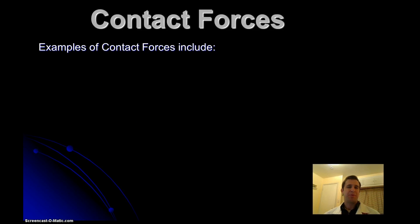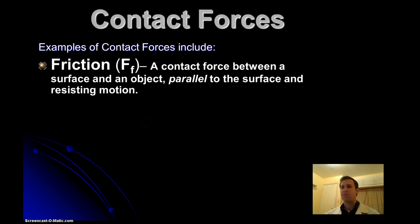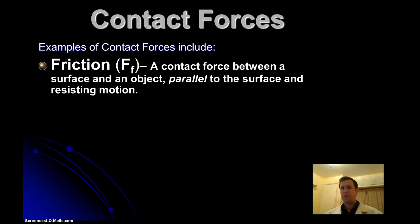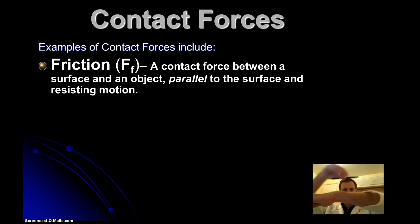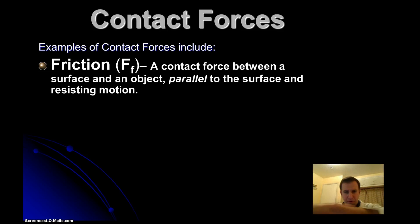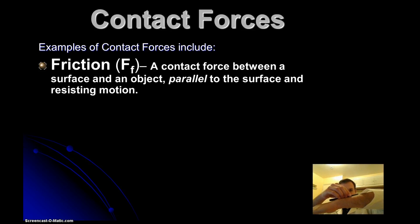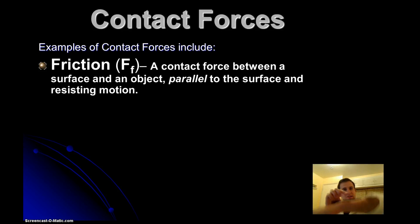Here are a couple of examples of what contact forces include. First of all, friction is a contact force — it's a contact force between the surface of something and an object. A frictional force is always going to be parallel to the surface. So if our surface is nice and horizontal, like a pen sitting on top of it, the friction would be parallel to that surface. Likewise, if our surface is diagonal and I put the pen on there, friction pulls up at that diagonal.